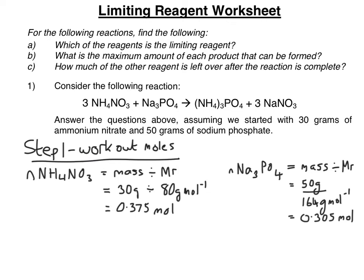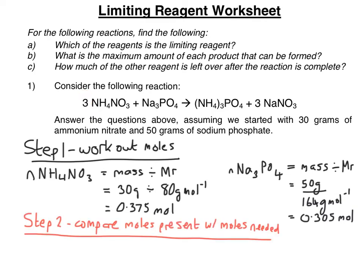If you look carefully at the equation, you'll see that there's three moles of ammonium nitrate to every one mole of sodium phosphate. So the next thing you have to do is compare the moles present with the moles needed. The moles needed will be revealed by the equation.